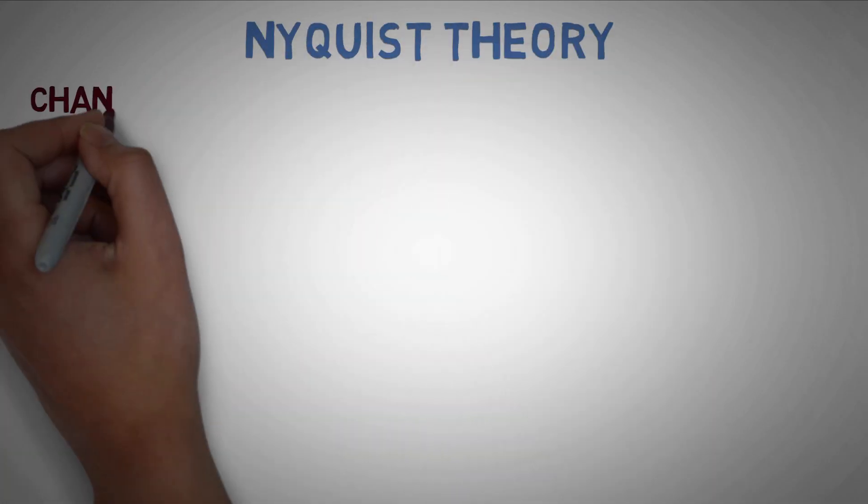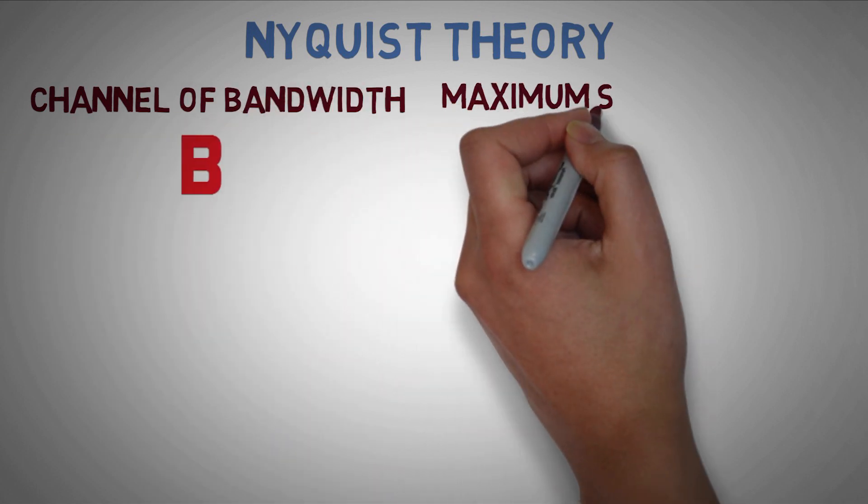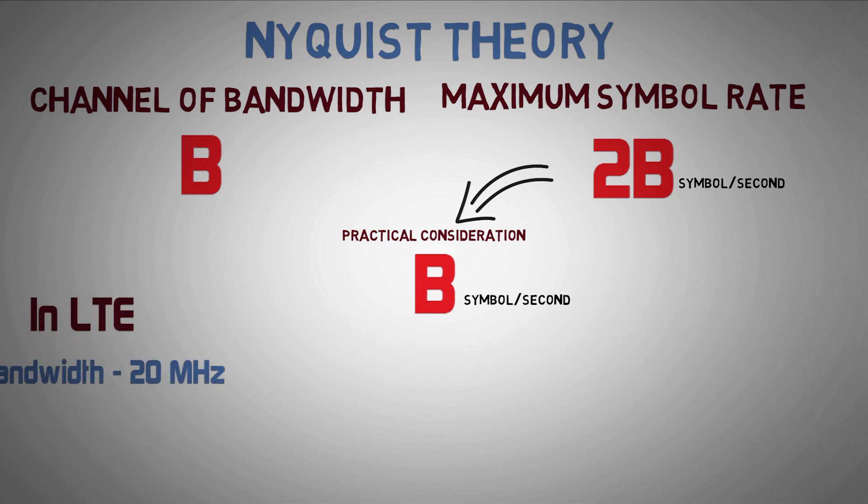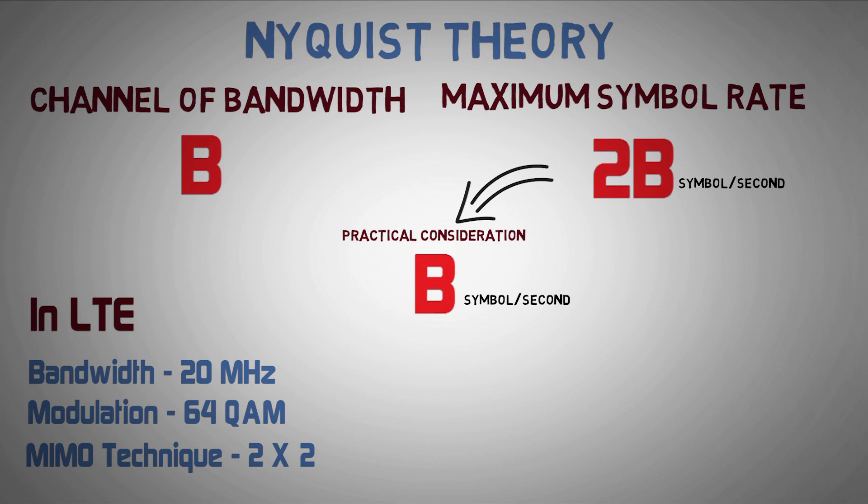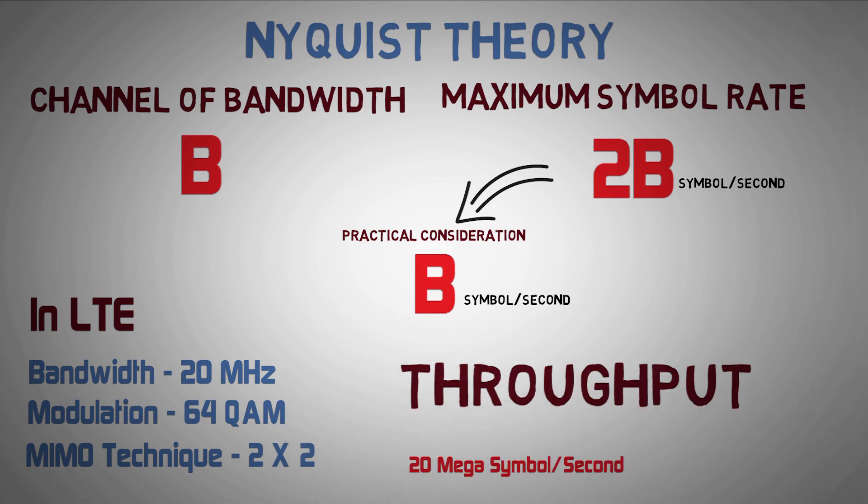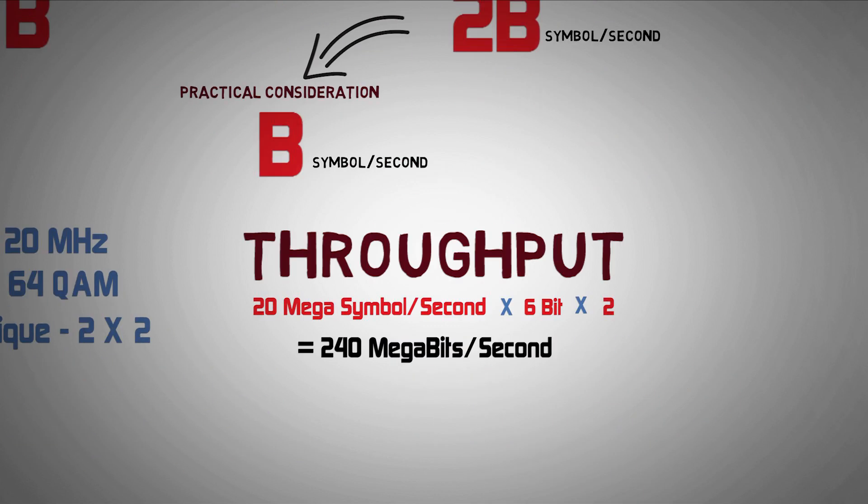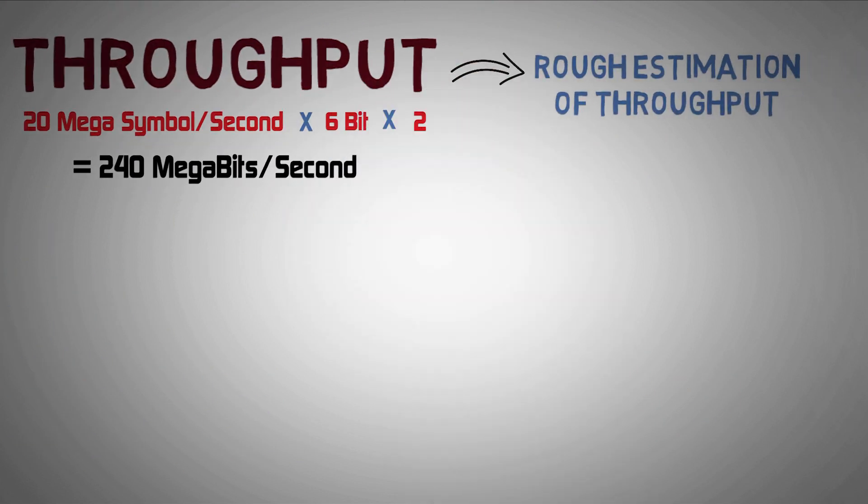Nyquist theory suggests that a channel of bandwidth B can provide a maximum symbol rate of 2B symbols per second. However, for practical consideration the symbol rate is usually taken as B symbols per second. Let's assume an LTE bandwidth of 20 MHz using 64 QAM over its whole spectrum with 2x2 MIMO. Then considering Nyquist theory, the throughput will be 20 mega symbols per second multiplied by 6 bits per symbol times 2 for MIMO, giving 240 megabits per second. This is only a rough estimation of total throughput an eNodeB can provide over one of its sectors with given scenarios.